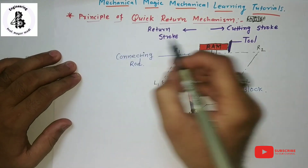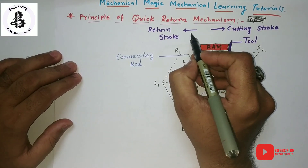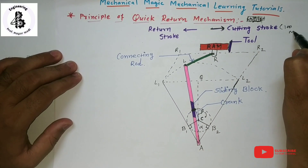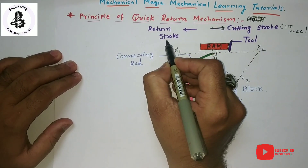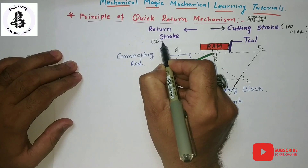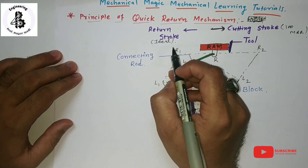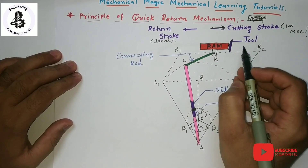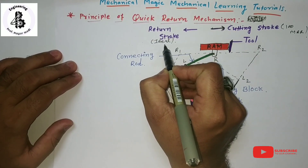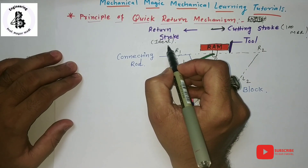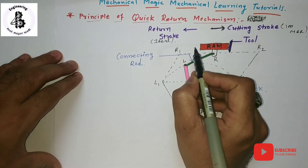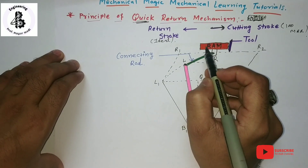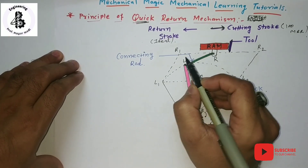In a shaper machine, the cutting stroke by the RAM has a hundred percent metal removal rate, while the return stroke is an idle stroke. The cutting stroke helps to cut the material, and whenever the RAM is in the return stroke, there is no material removal. So I would like to convert that return stroke into a quick return, which will reduce manufacturing time and increase the productivity of the product.